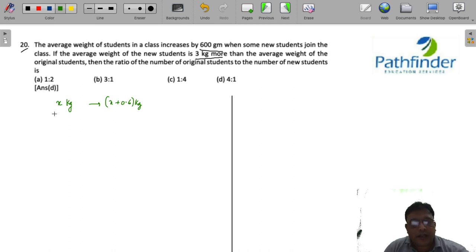Let us say there were m old students and n new students. The average weight of n new students is x plus 3. So what do you get? You get m into x plus n into x plus 3, upon m plus n, must be equal to x plus 0.6.